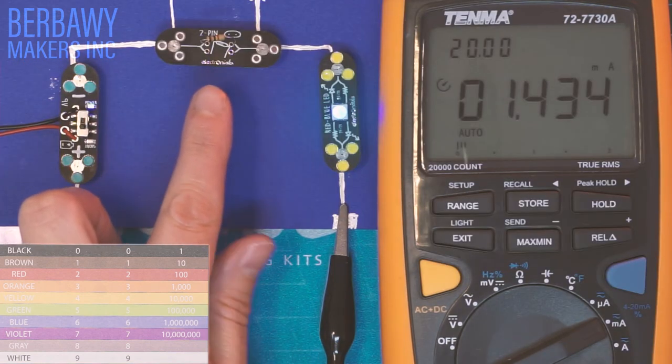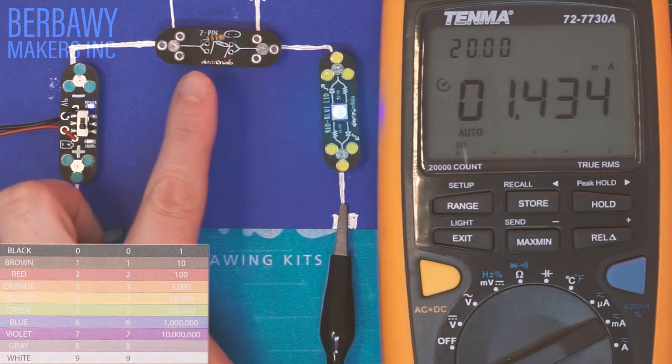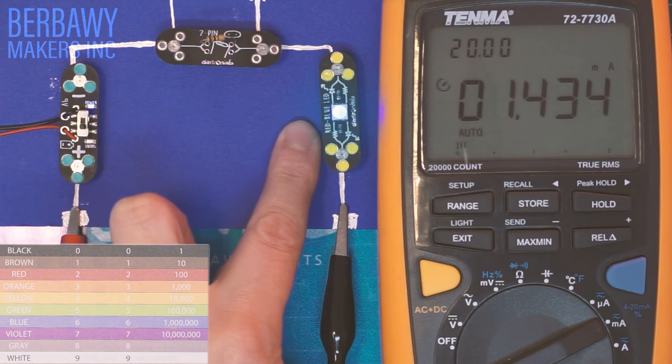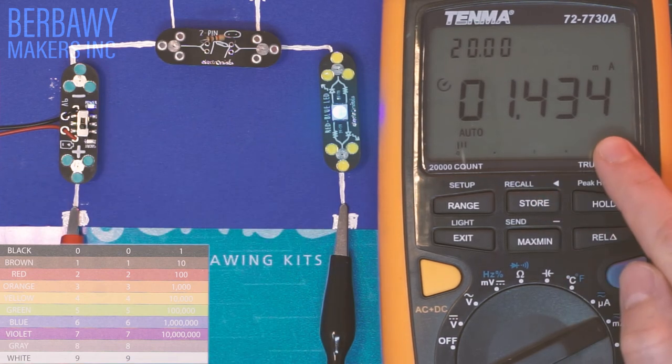This resistor has slightly more resistance. Here we have brown, black, red, or 1000 ohms. Our LED is still pretty bright, but not quite as bright, and our current is now 1.4 milliamps.